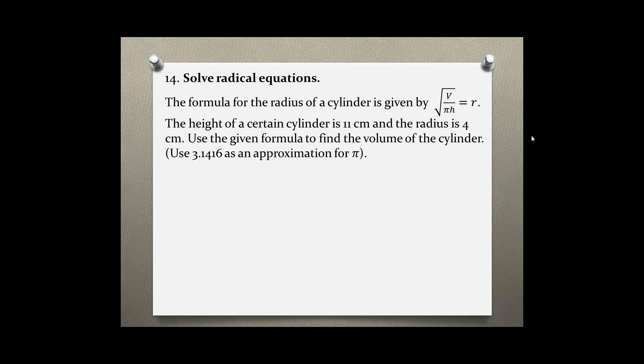The height of a certain cylinder is 11 cm and the radius is 4 cm. Use the given formula to find the volume of the cylinder and use 3.1416 as an approximation for pi.